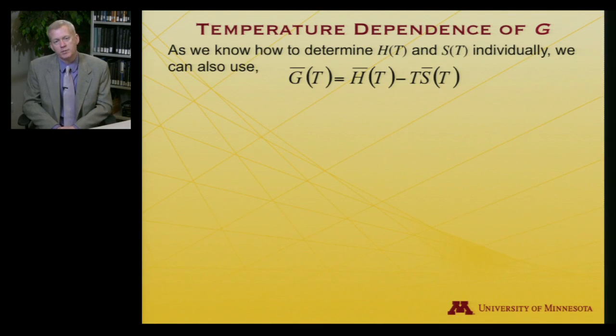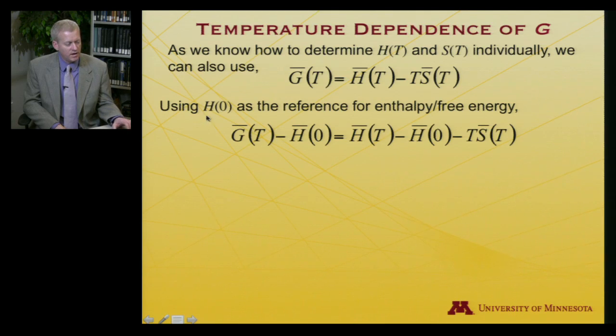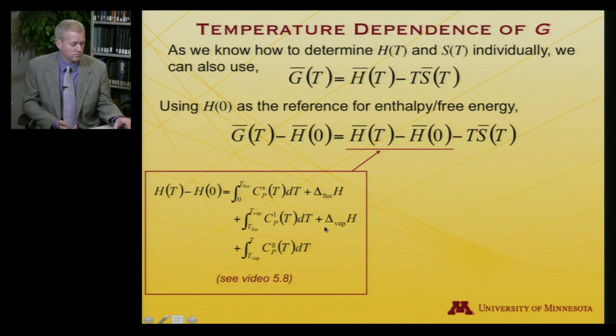Now, there's another way that we could actually think about the temperature dependence of G, and that is to recognize that if G is equal to H minus TS, and now I'll emphasize temperature dependence. So G at a given temperature, H at a given temperature, S at a given temperature. And let's work with molar quantities for convenience. So I've got an over bar on all these symbols. Well, let's take enthalpy at zero degrees Kelvin as the reference for our free energy. And why am I taking enthalpy as a reference for a free energy? Well, if I'm at zero degrees Kelvin, H minus TS is H minus zero times entropy. And so G is equal to H at zero degrees Kelvin. So I can write GT minus H of zero is equal to HT minus H of zero minus TS.